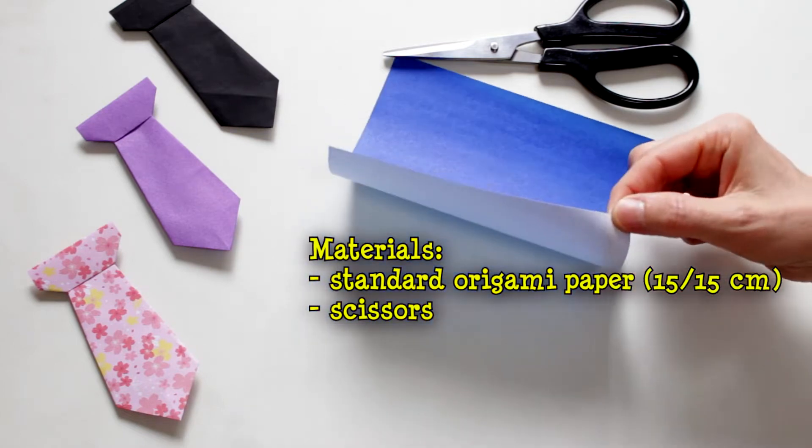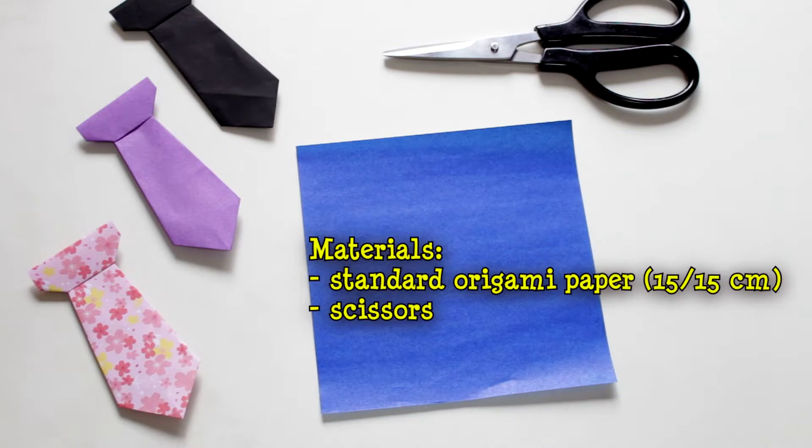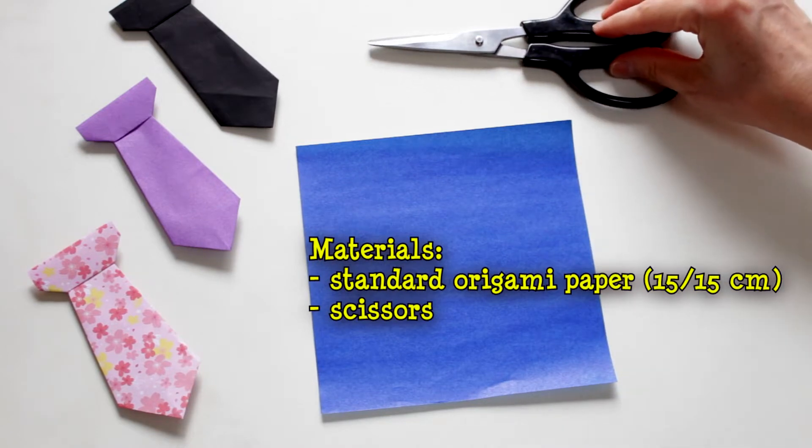We can use a regular sheet of origami paper or you can choose one with different patterns. We also need a pair of scissors.